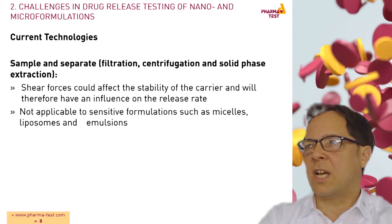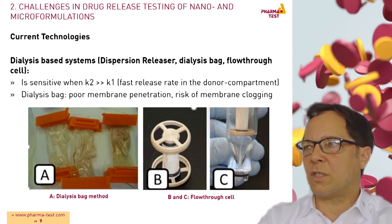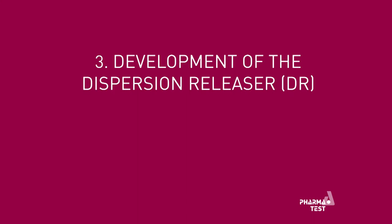And second, dialysis-based methods such as the dispersion releaser, dialysis-back and flow-through cell methods. The picture shows dialysis-backs and special adapters for the flow-through cells. The main problem of these systems is the possibility of inhomogeneity in the donor compartments. The risk of having supersaturation and membrane clogging is very high.